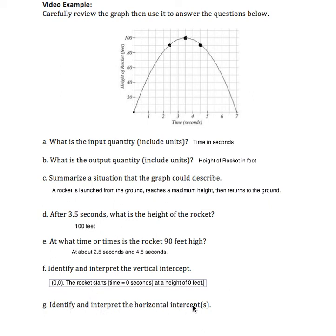Identify and interpret the horizontal intercepts. Notice that in this case, because my vertical intercept was at (0, 0), I also have a horizontal intercept at (0, 0). And then I have another horizontal intercept at (7, 0). It's okay to have more than one.